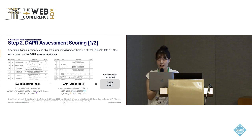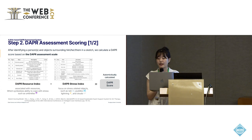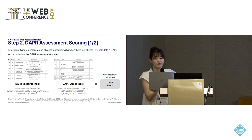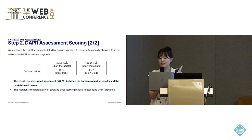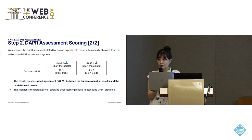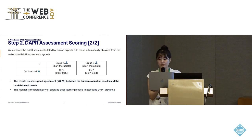After identifying objects in a sketch, we calculate a DAPR score based on the assessment scale. The scoring model is divided into types such as frequency, distance, and area according to the description of each scale. We adopted the method proposed in our previous paper, Alpha DAPR, as-is. Finally, the DAPR score is obtained by subtracting the stress index from the resource index. To verify whether this system operates correctly, we compared DAPR scores calculated by human experts with those automatically obtained by our system. The interclass correlation coefficient between the human and automated system was 0.75 and 0.77 for each expert group, showing good agreement, which highlights the potential of applying deep learning models in assessing DAPR drawings.